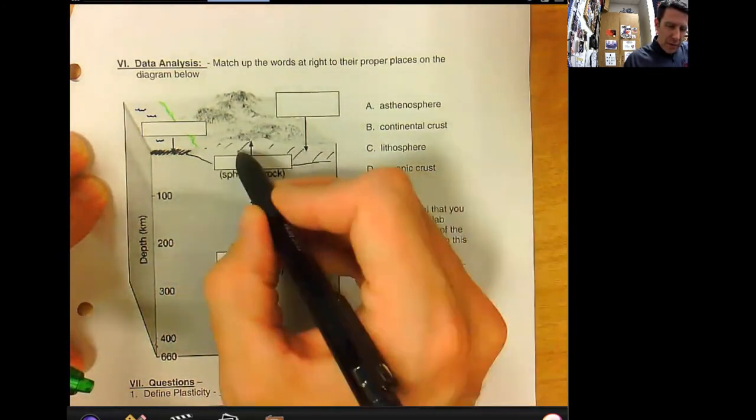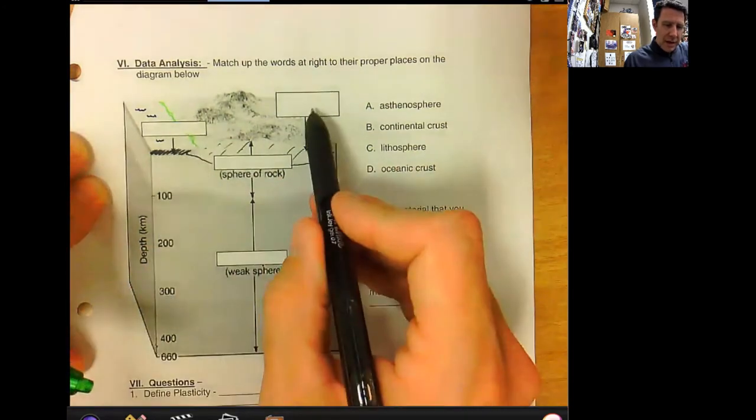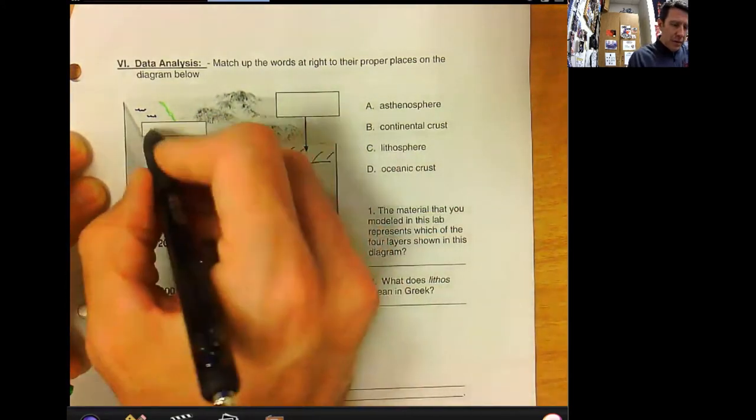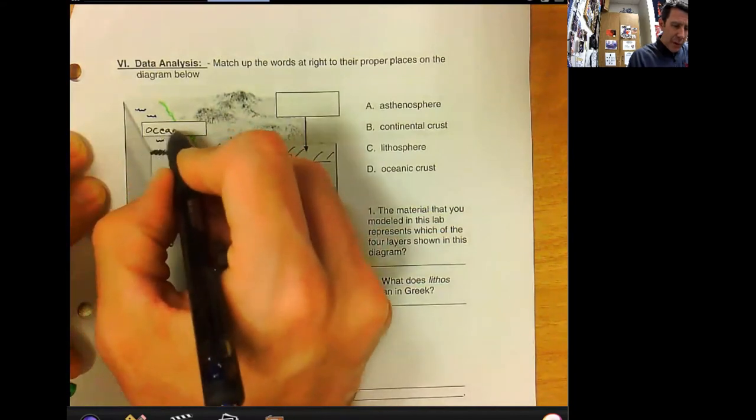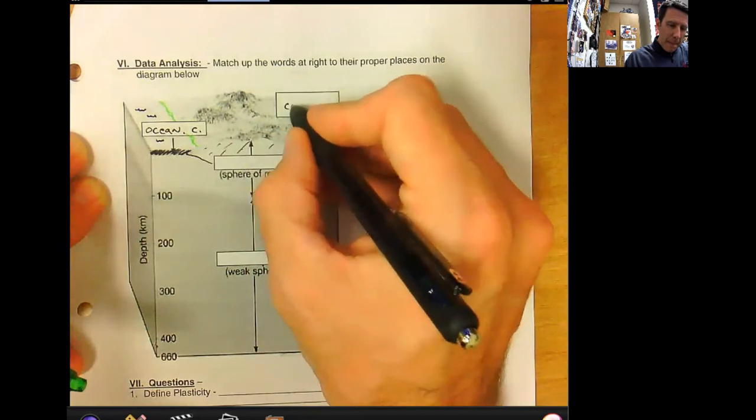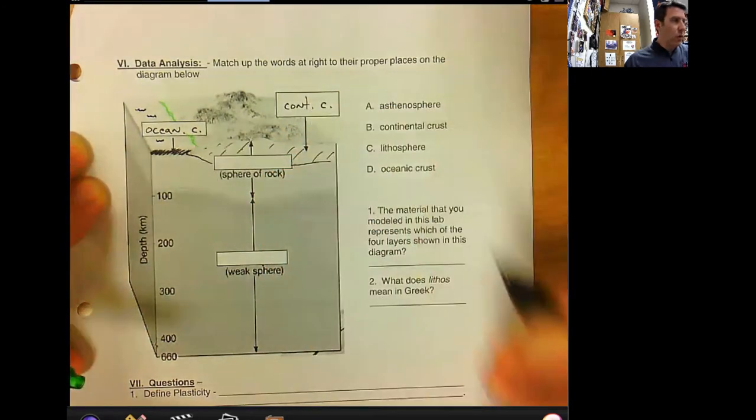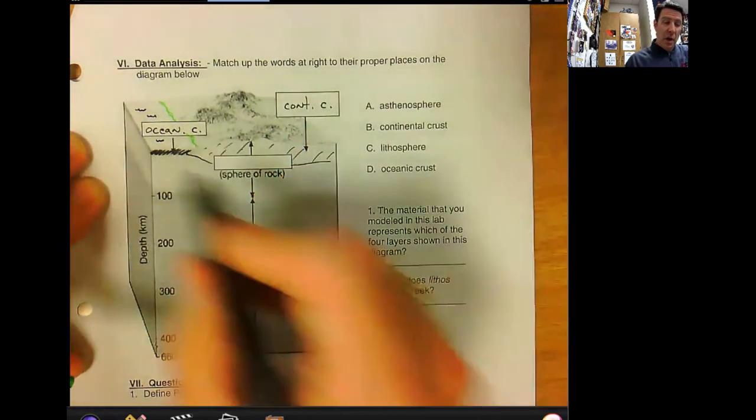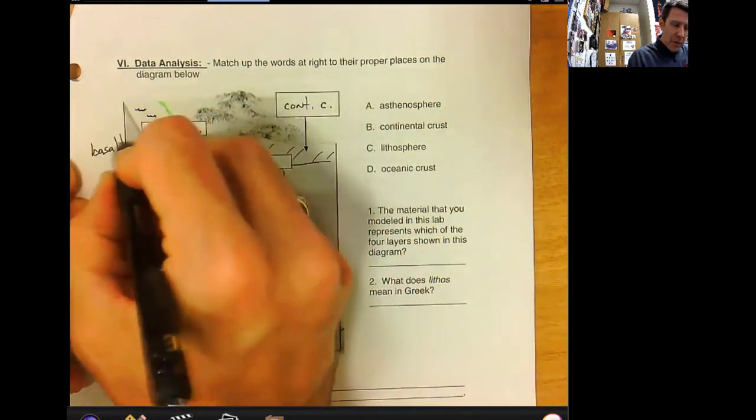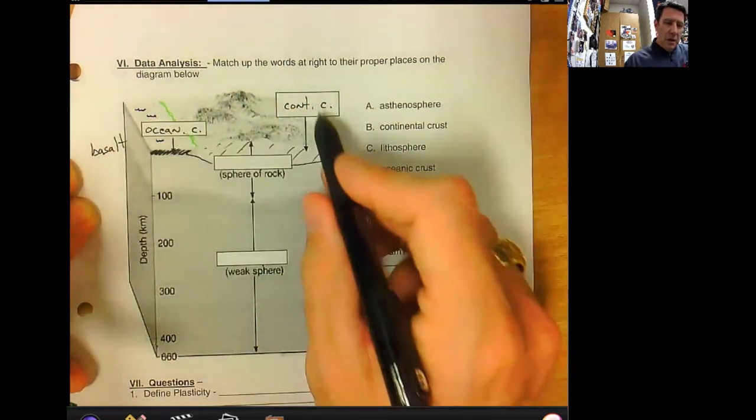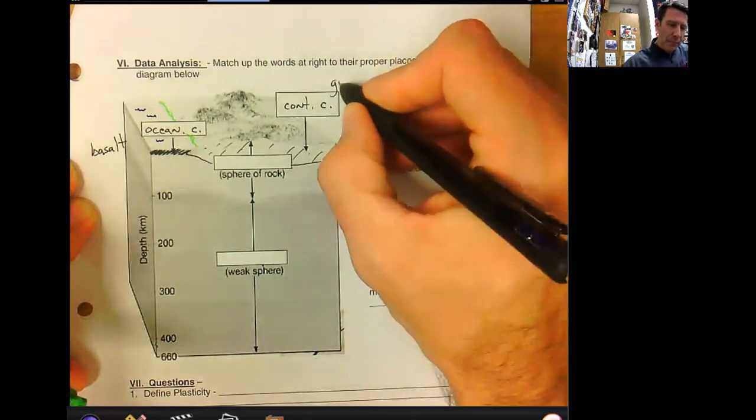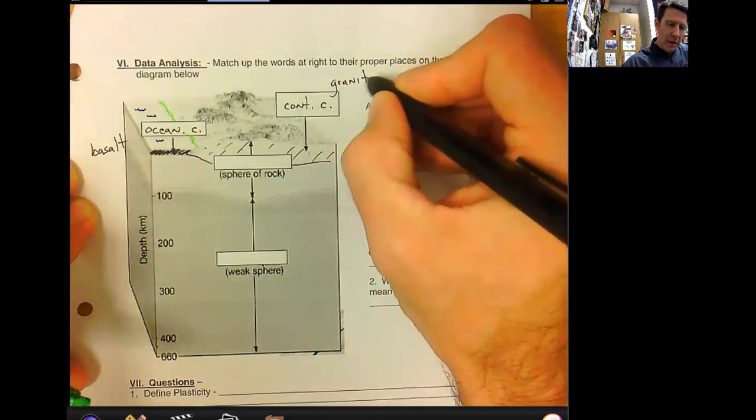So what's the difference between this and this? We have water out here, so this is ocean crust, and this is continental crust, and there is a difference. Ocean crust is mainly made up of basaltic rock. Continental crust, what is it made up of? Starts with a G. Granitic rock.